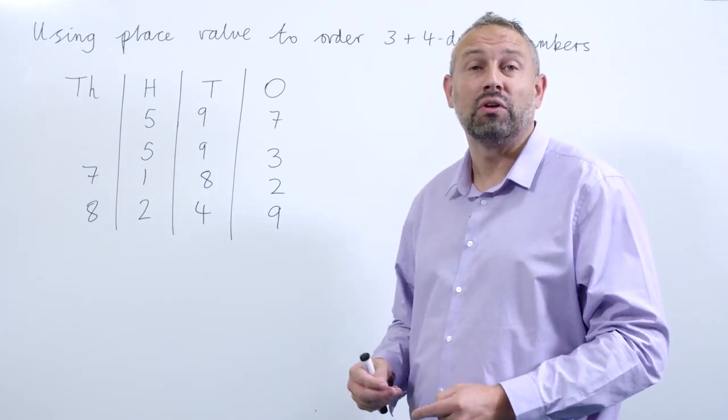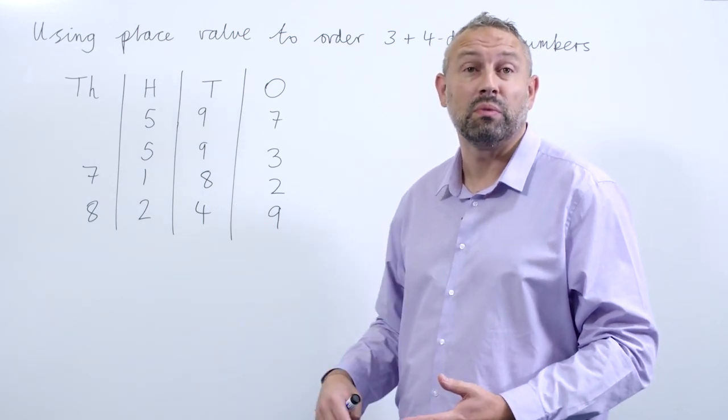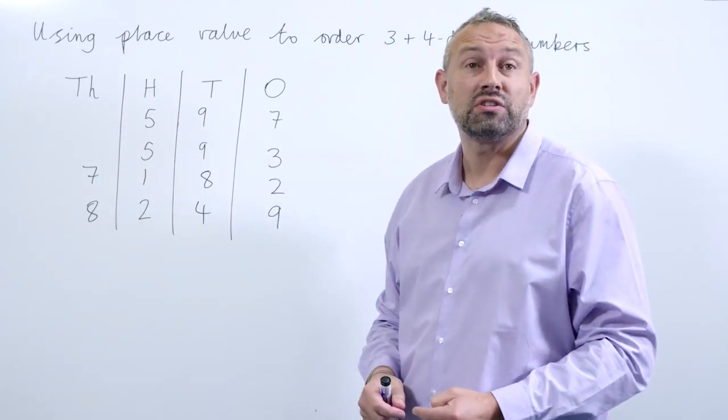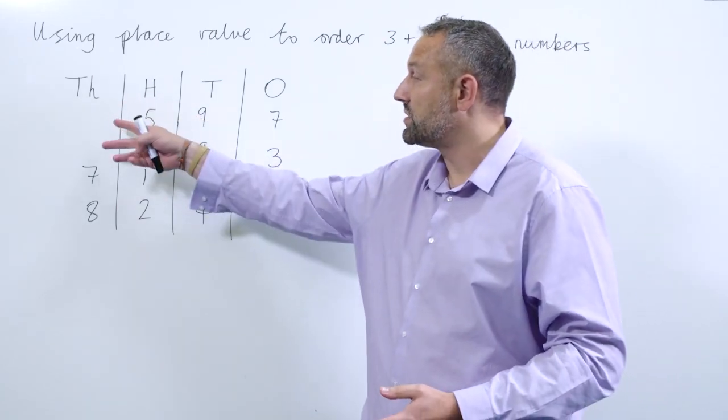That's going from the largest to the smallest. So the first thing we have to do is we look into the thousands column because that's where the largest number is, and we can see that we have two three-digit numbers and two four-digit numbers.